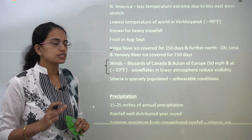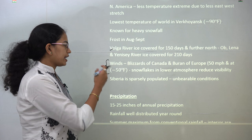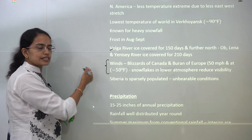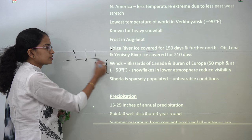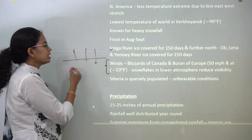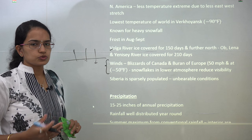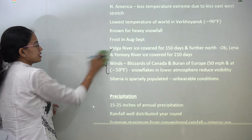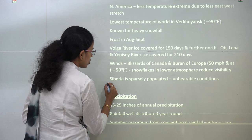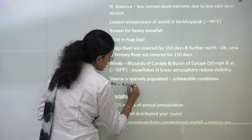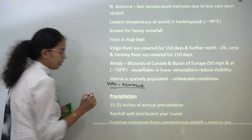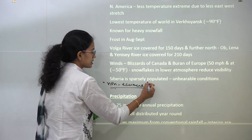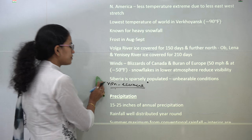Because of the fast wind speed, snowfall occurs and snowflakes form in the lower atmosphere, as a result reducing visibility in this region. Most of these areas are sparsely populated. The regions which are sparsely populated are known as non-ecumene. There are two classifications: ecumene and non-ecumene, where the sparsely populated region is known as non-ecumene.